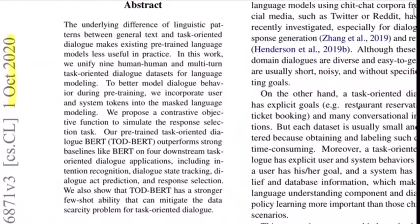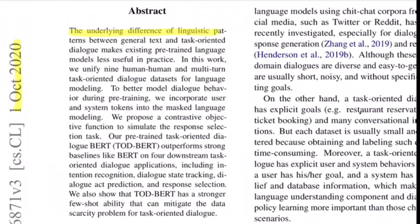Let's read the abstract. The underlying difference of linguistic patterns between general text and task-oriented dialogue makes existing pre-trained language models less useful in practice. This is pretty true because if you train a language model by giving it general text from books or Wikipedia, those are open-ended and topic-agnostic. There is no concept of dialogue flowing in a certain format to meet certain criteria, which usually happens in task-oriented dialogue systems.